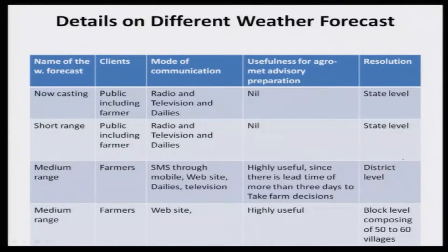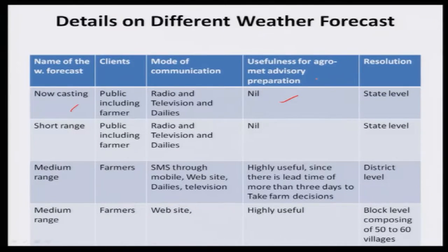Who are the clients and how is each type of forecast communicated to farmers? For nowcast, the clients are only the public — radio, television, and dailies are used to communicate. It cannot be used for developing any agro-advisory, because the event will occur within an hour. Resolution is at the state level. For short range forecast, clients are the public including farmers. Radio, television, and dailies are used. Agro-advisory development is impossible here too, because it covers only one or two days — even if prepared, it cannot be communicated to the farmers in time for action. This is also given at the state level.